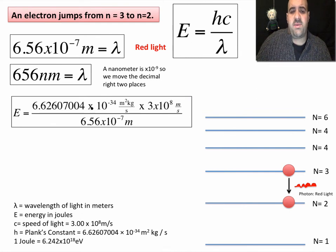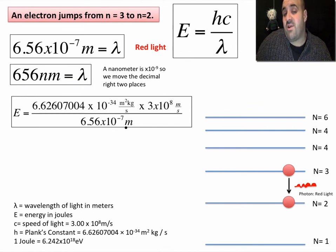All you're doing is multiplying this really small number, 10 to the negative 34th, times this larger number, times 10 to the eighth, divided by a small number, 6.56. And this has to be in meters, not nanometers.